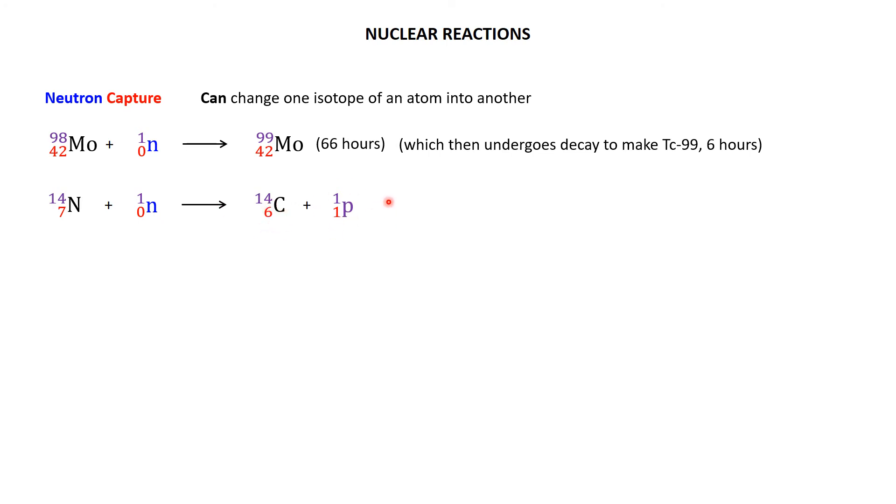So, this nice little puzzle I could have given you, what's the other particle that comes out? Well, the total mass is 15, carbon-14, so therefore a mass of 1, charge at the start was 7, carbon-6 has a charge of 6, so therefore 1 left. So, when nitrogen-14 is bombarded with neutrons, it makes carbon-14 and a proton.